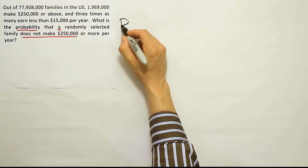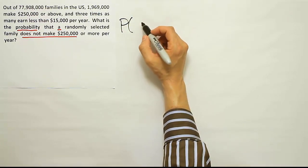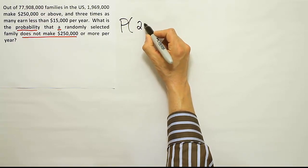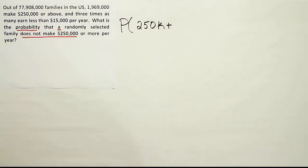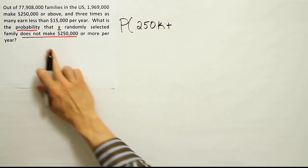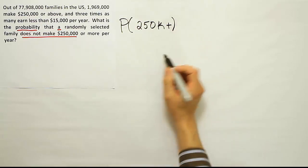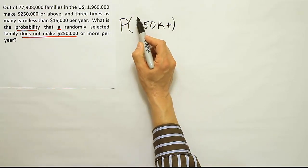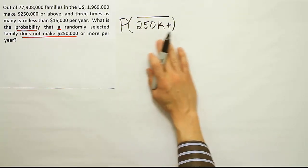I'll be looking for the probability that a family does not make $250,000 or more per year. Let me use a shorthand to make our lives easier. I'll write $250,000-plus, where that little plus sign indicates 'or more.' So 'does not make $250,000 or more per year' — I'll put a bar above it to indicate 'does not make that.' This is a handy notation we'll see later.